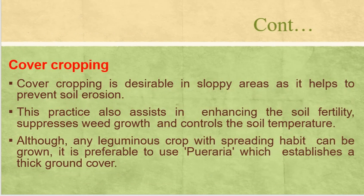Cover cropping is also done in rubber cultivation. Cover cropping is desirable in sloped areas as it helps to prevent soil erosion. This practice also assists in enhancing soil fertility, suppressing weed growth, and controlling soil temperature. Although any leguminous crop with a spreading habit can be grown, it is preferable to use Pueraria, which establishes a thick ground cover.